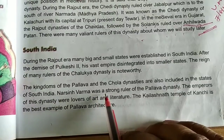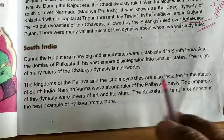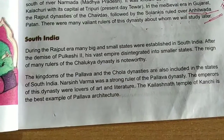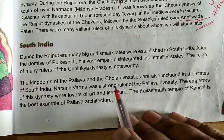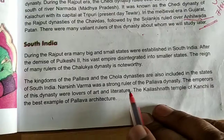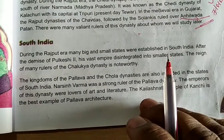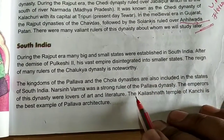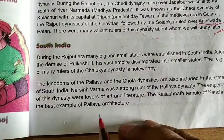Narsimh Verma was a strong ruler of the Pallava dynasty. The emperors of this dynasty were lovers of arts and literature — meaning writing, poems, prose, dramas, etc. The Kailashnath temple of Kanchi is the best example of Pallava architecture.